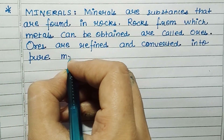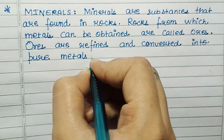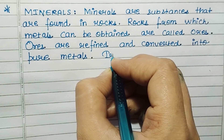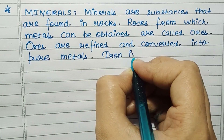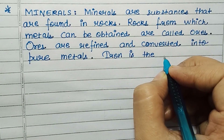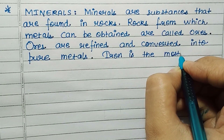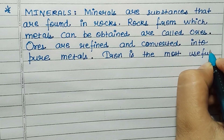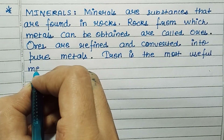Minerals are substances that are found in rocks. Rocks from which metals can be obtained are called ores. Ores are refined and converted into pure metals. Iron is the most useful metal.